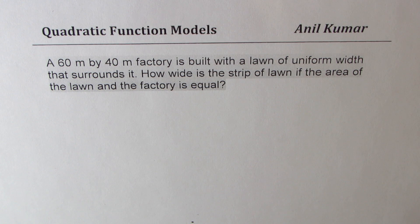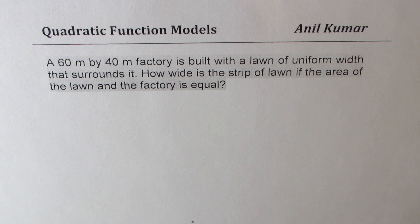The question here is: a 60 meter by 40 meter factory is built with a lawn of uniform width that surrounds it. How wide is the strip of the lawn if the area of the lawn and the factory is equal?